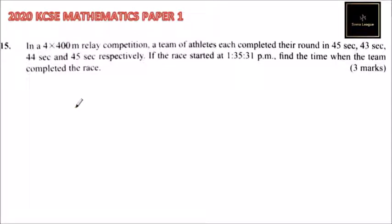Question number 15. We are told in a 4x400 meter relay competition, a team of athletes each completed the round in 45 seconds, 43 seconds, 44 seconds and 45 seconds respectively. If the race started at 1:35 PM and 1 second, find the time when the team completed the race.